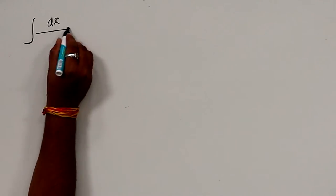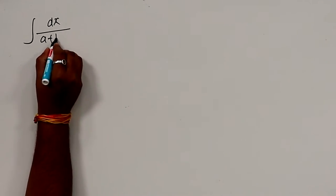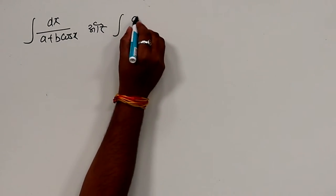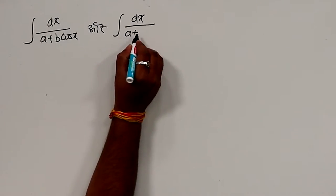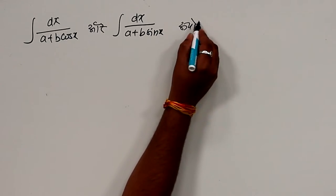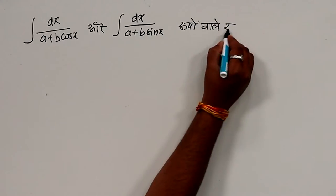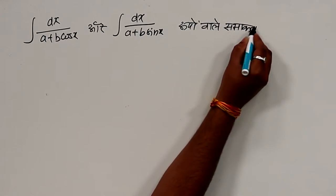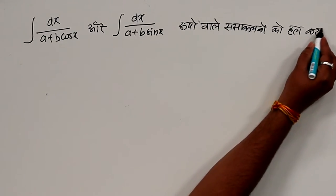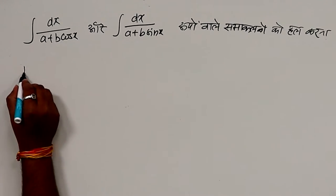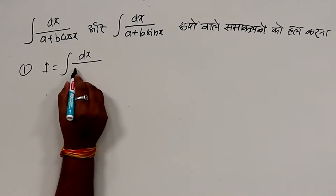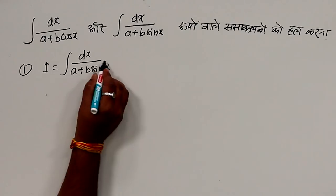Integration dx upon (a + b·cos x) or integration dx upon (a + b·sin x) — हम इस रूपों वाले समाकलनों को हल करना सीखेंगे। माना i = ∫ sin dx / (a + b·sin x) है।